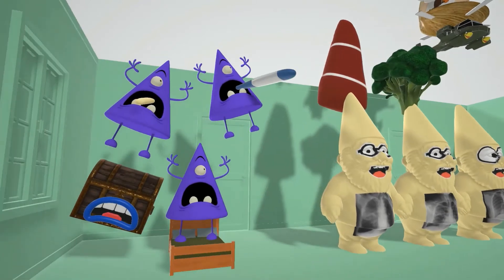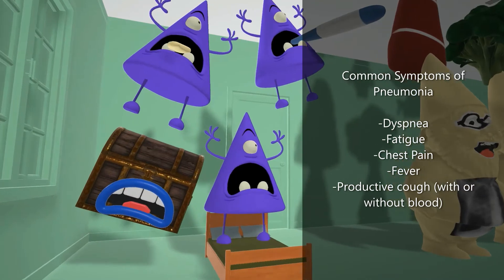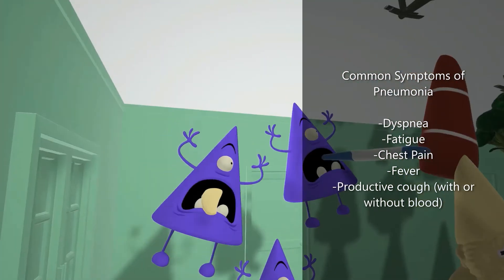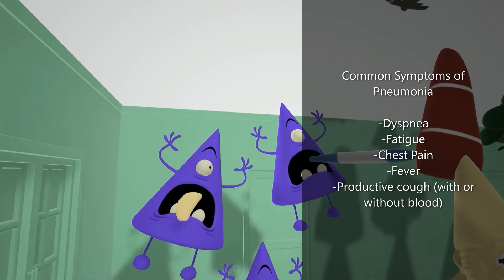One of the microbes is standing on a bed and has shortness of breath, reminding us that inflammation and fluid buildup in the lungs makes it harder to breathe. He's standing on a bed to remind us of the fatigue that often follows pneumonia as a systemic symptom. Next to him, there's a chest that's in pain to remind us of chest pain. On top, there's a microbe with a thermometer to remind us of the fever that often ensues, and this guy is coughing up sputum — reminding us of the productive cough, with or without blood.